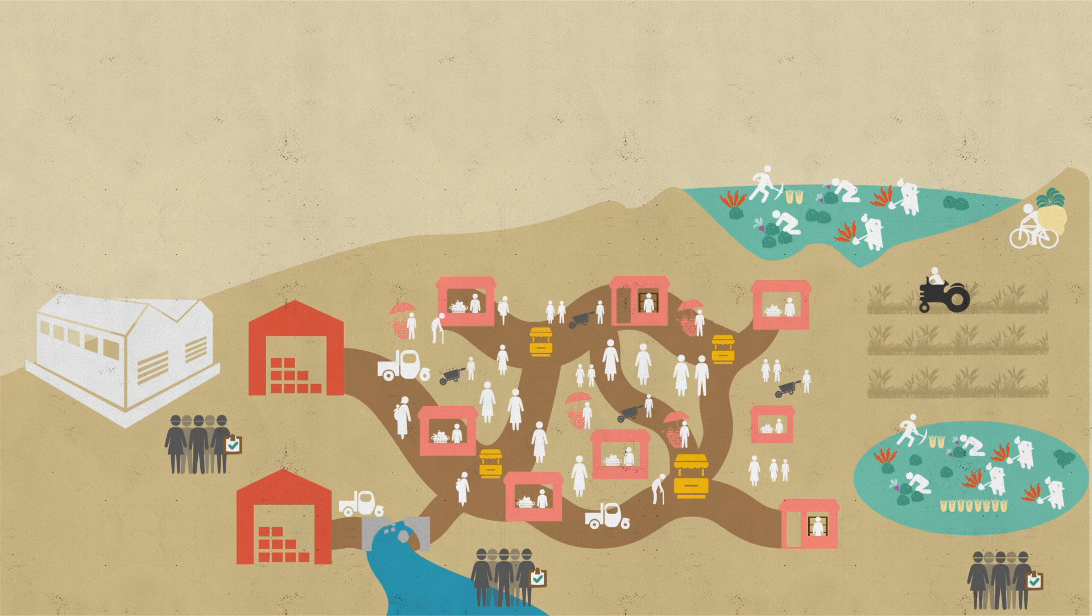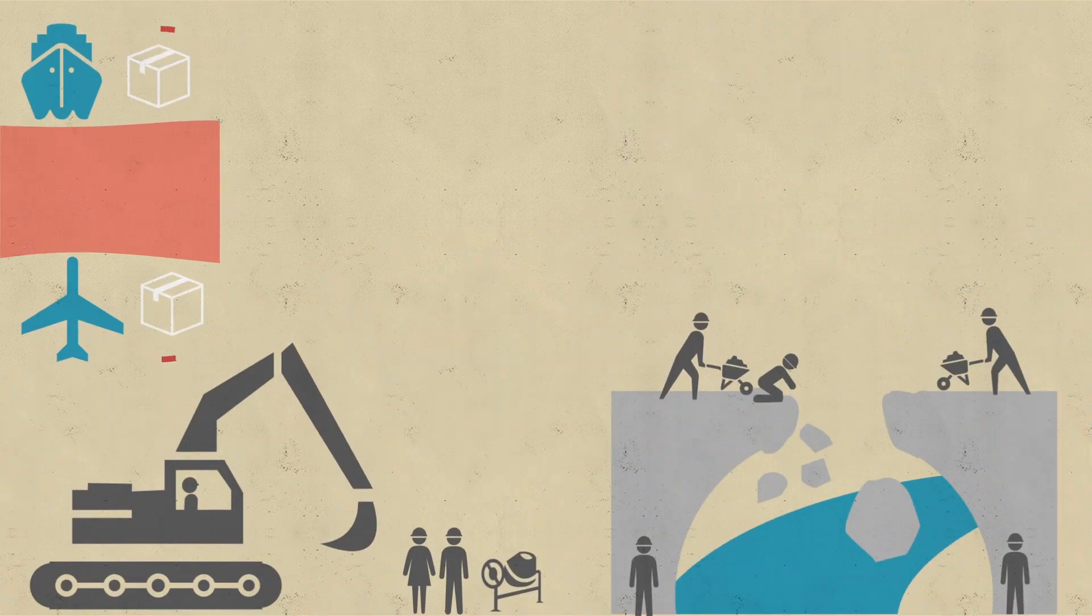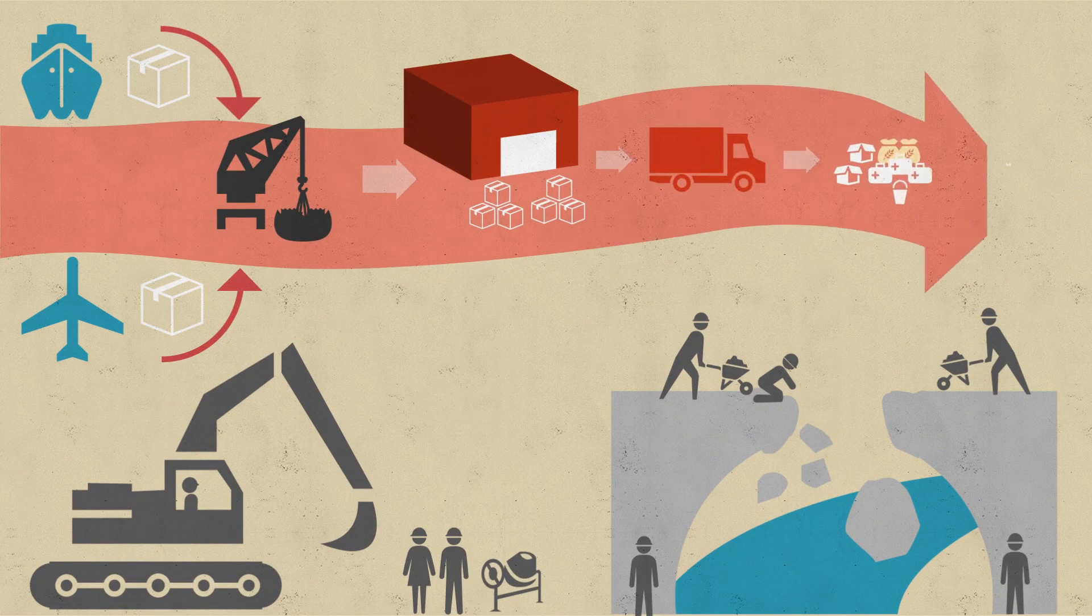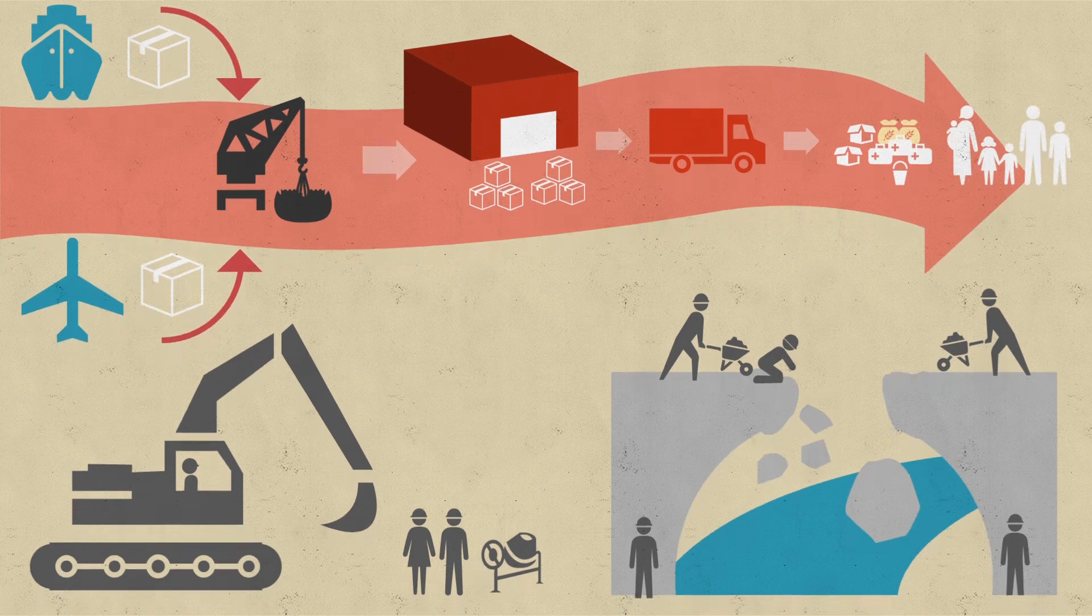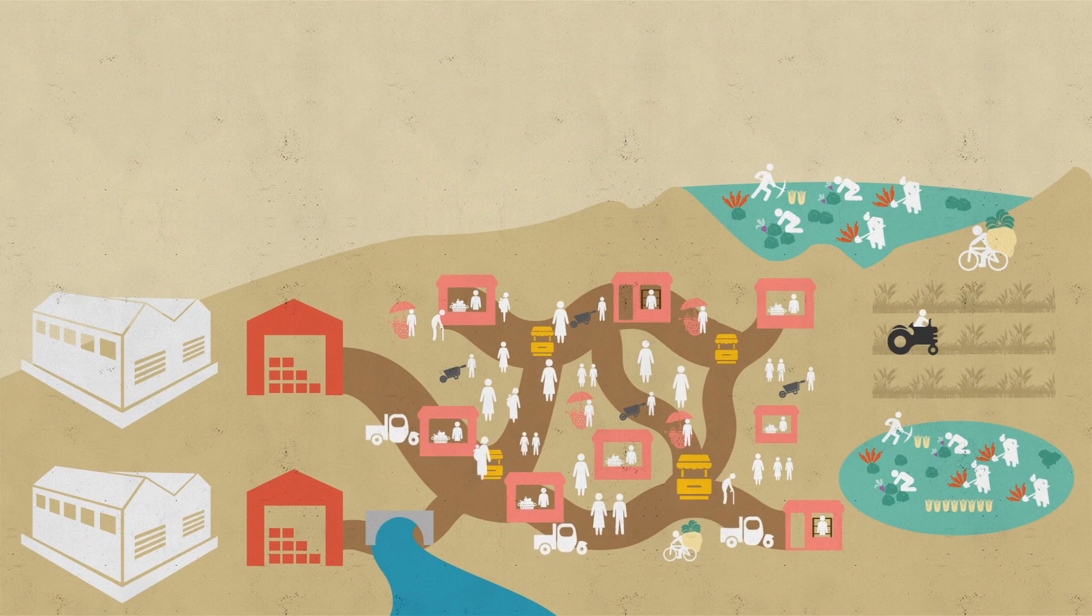And we need to be agile enough to switch back to delivering directly, if the market system isn't functioning or takes a turn for the worst. And when it's functioning again, we can switch back to delivering with the local market system.